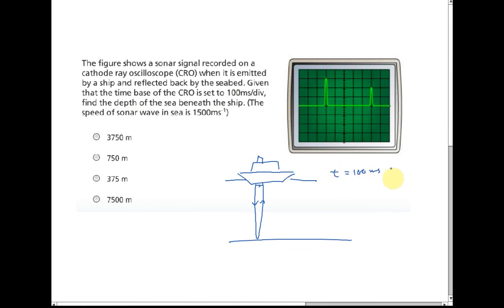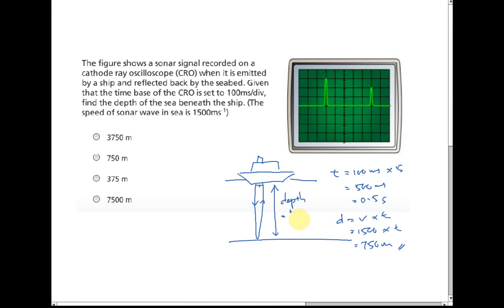The total time is 100 milliseconds multiplied by 5, giving 500 milliseconds, which is 0.5 seconds. The total distance traveled equals speed times time: 1500 m/s × 0.5 s = 750 meters. But this is the total round-trip distance — down and back. The depth is half of the distance traveled, so depth = 750 ÷ 2 = 375 meters.